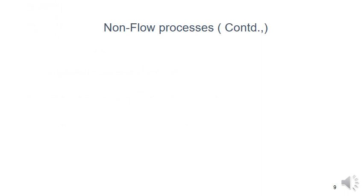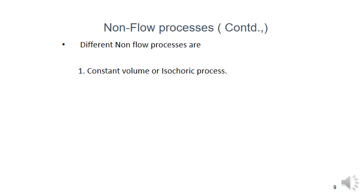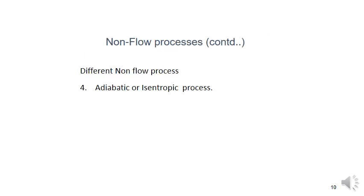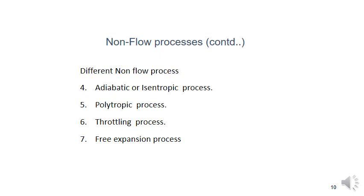The different non-flow processes covered in this chapter are: (1) constant volume or isochoric process, (2) constant pressure or isobaric process, (3) constant temperature or isothermal process, (4) adiabatic or isentropic process, (5) polytropic process, (6) throttling process, and (7) free expansion process. Each process will be discussed one per class.